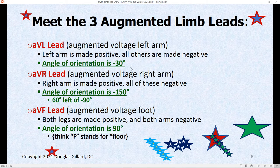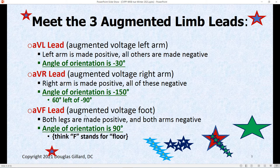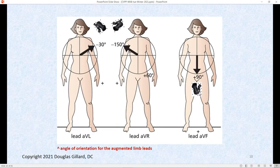The augmented leads are basically the same old Einthoven's triangle leads, but the computer can flip the leads from positive to negative in different combinations, making three more leads out of the original three. Those are the augmented leads. AVL has an angle of orientation of negative 30. AVR has an angle of orientation of negative 150 — this is the only view of the right side of the heart, so it's an important lead. And AVF, which I call the peeper — it's like a peeper laying on the floor looking straight up — has an angle of orientation of 90 degrees.